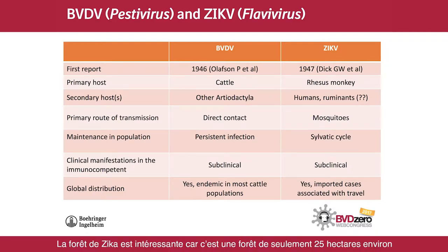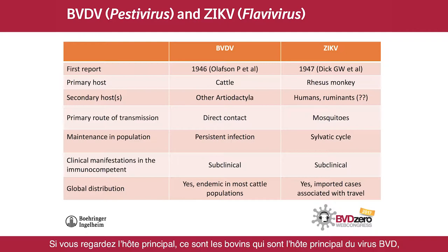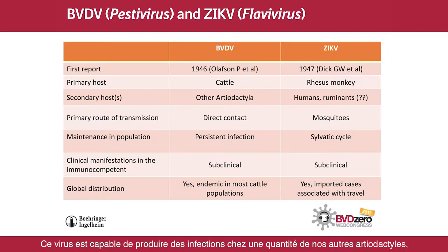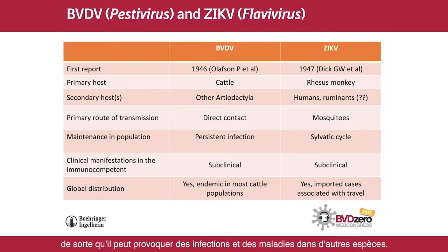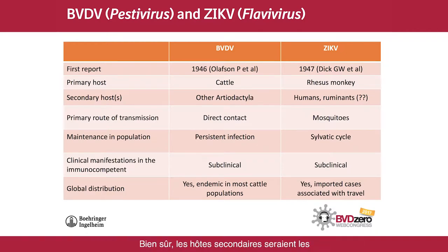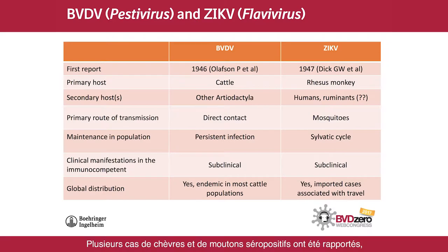The Zika forest is interesting because it's only a 60-acre forest but has the greatest biodiversity of mosquito populations in the world. Looking at the primary host, BVD virus has cattle as its primary host, but it is not host-restricted — it can create infections in many other artiodactyls including white-tailed deer, sheep, goats, and pigs. BVD is the least host-restricted of the pestiviruses. For Zika virus, the primary host is mainly the rhesus monkey. Secondary hosts include humans and other animals, with reports of seropositive goats and sheep, so Zika virus may not be entirely host-restricted either.